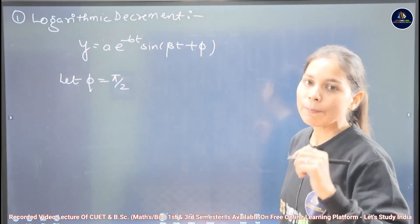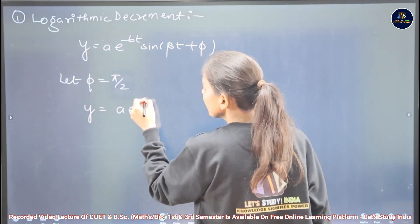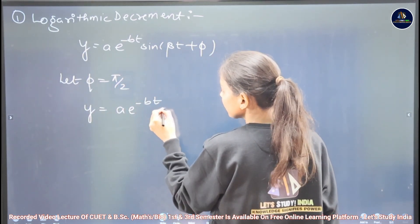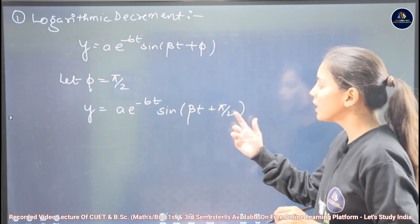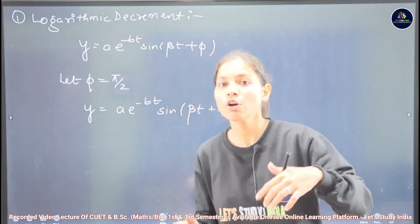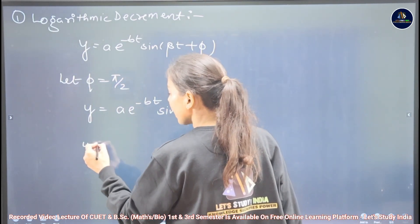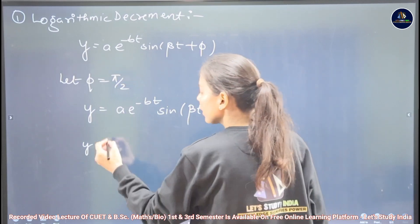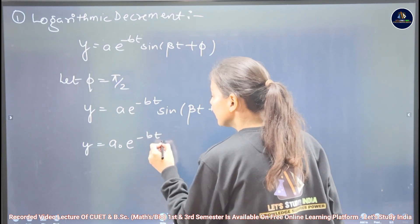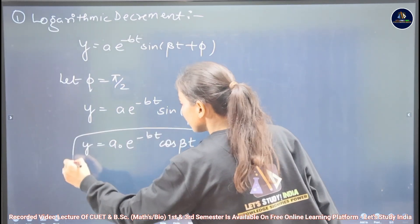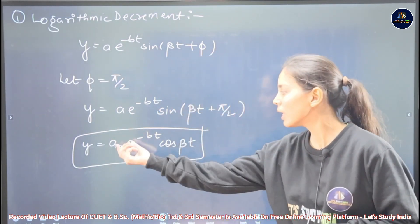With the phase φ = π/2, using sin(βt + π/2) = cos(βt), our displacement becomes y = A₀·e^(-bt)·cos(βt), where A₀ is the maximum amplitude. The amplitude is A₀·e^(-bt).